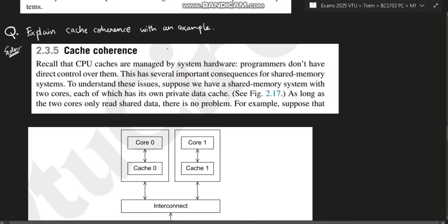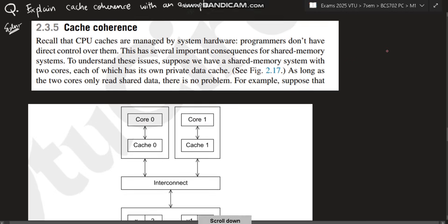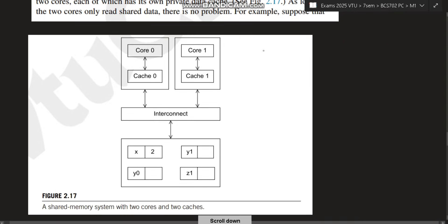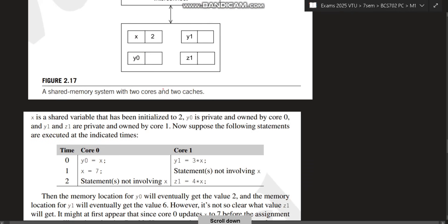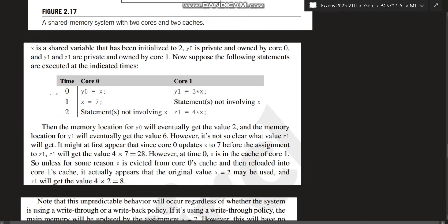Next is explain cache coherence with an example. Coherence means cache should be in sync. If we have two caches, both should be in sync. Otherwise, it will have some other data here, some other data there, and it will cause confusion. So how can that confusion happen? Suppose that there are two cores, core 0 and core 1. Each will have its own cache, interconnected to the memory. Now see, for example, there is an operation called y0 is equal to x. And x is a shared variable that has been initialized to 2. And y0 is a private variable owned by core 0. Y1 and yz are privately owned by core 1.